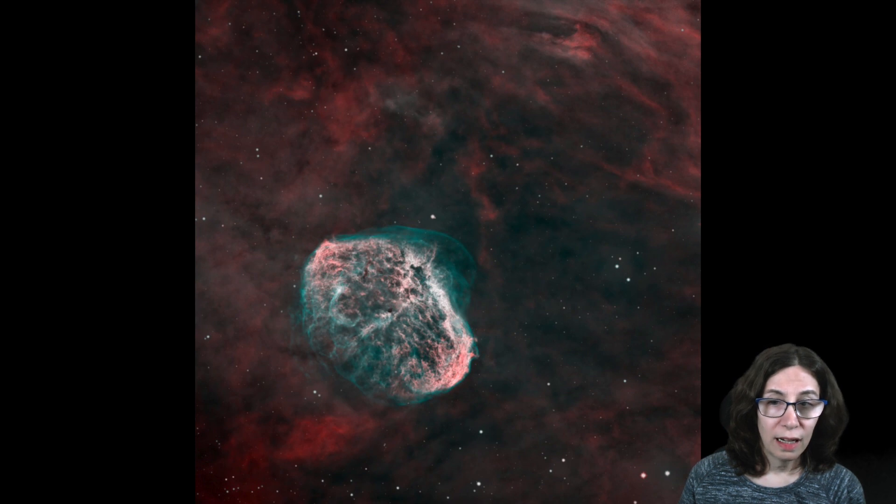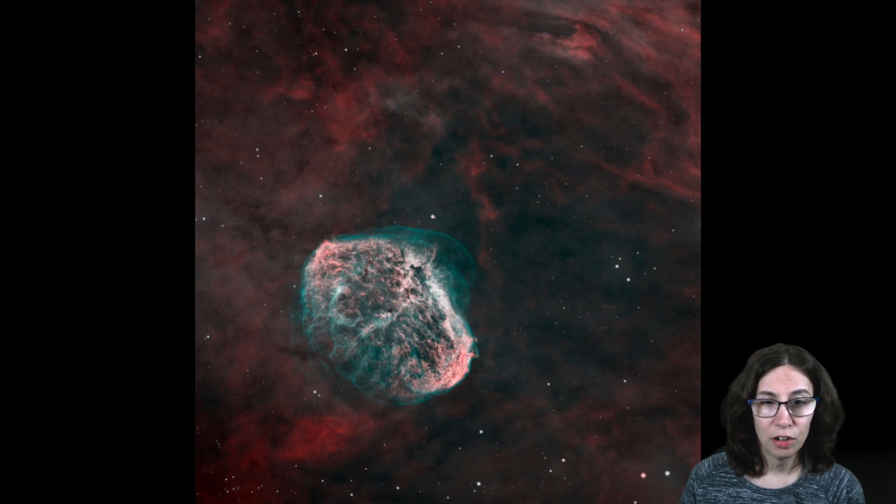Somewhere between 100,000 and 400,000 years ago, when WR 136 was a red supergiant, it blew off a shell of material. That shell is expanding at about 80 kilometers per second.